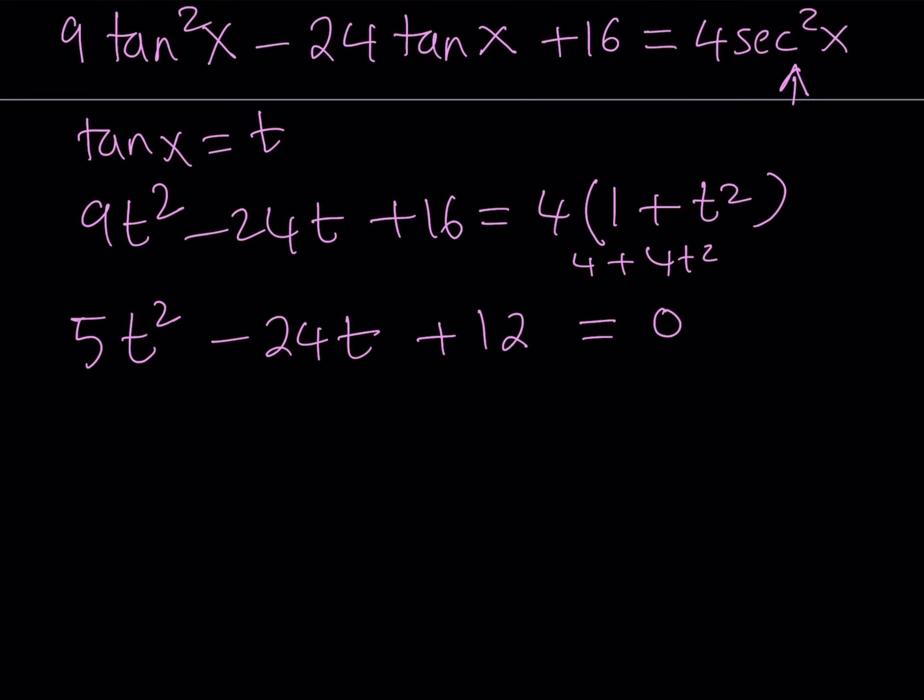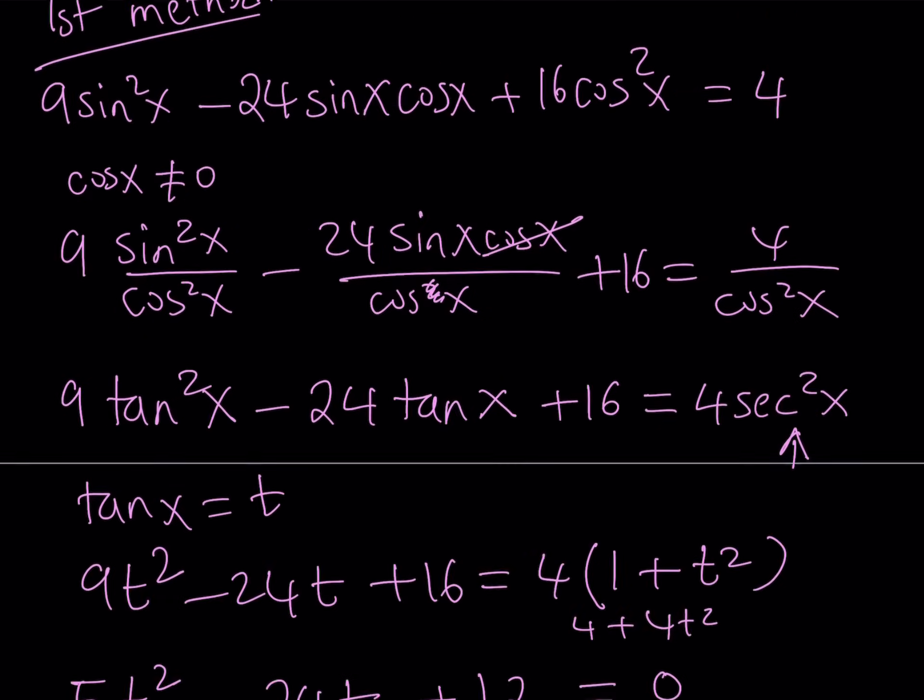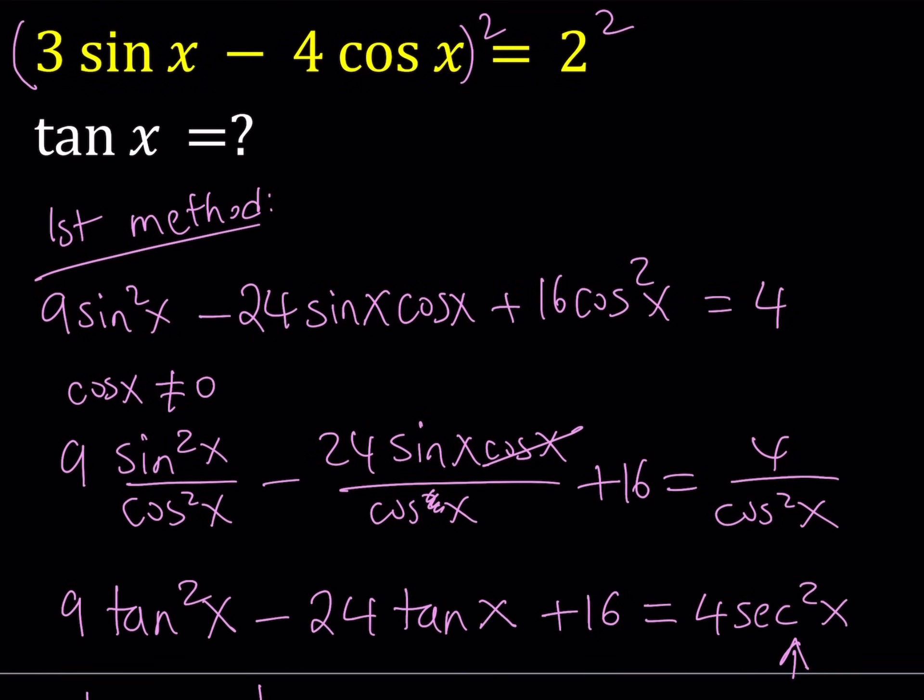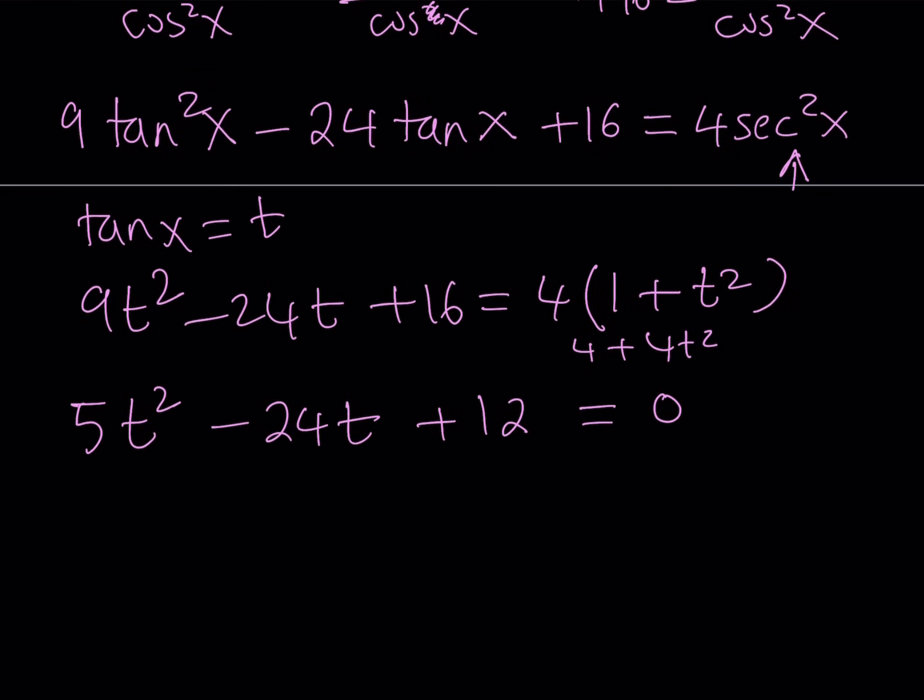So let's go ahead and do the following. Let's set tangent x equals t, because it's easier with substitution. And write it this way: 9t squared minus 24t plus 16. And I'm going to replace secant squared with 1 plus tangent squared, which I can write as 1 plus t squared. Now, let's go ahead and distribute everything.